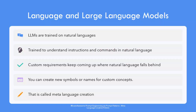Large language models like ChatGPT are trained to understand instructions and commands in natural language. While languages like English have a ton of vocabulary to codify things around us, there's no shortage of new — or may I say custom — requirements that keep coming up.